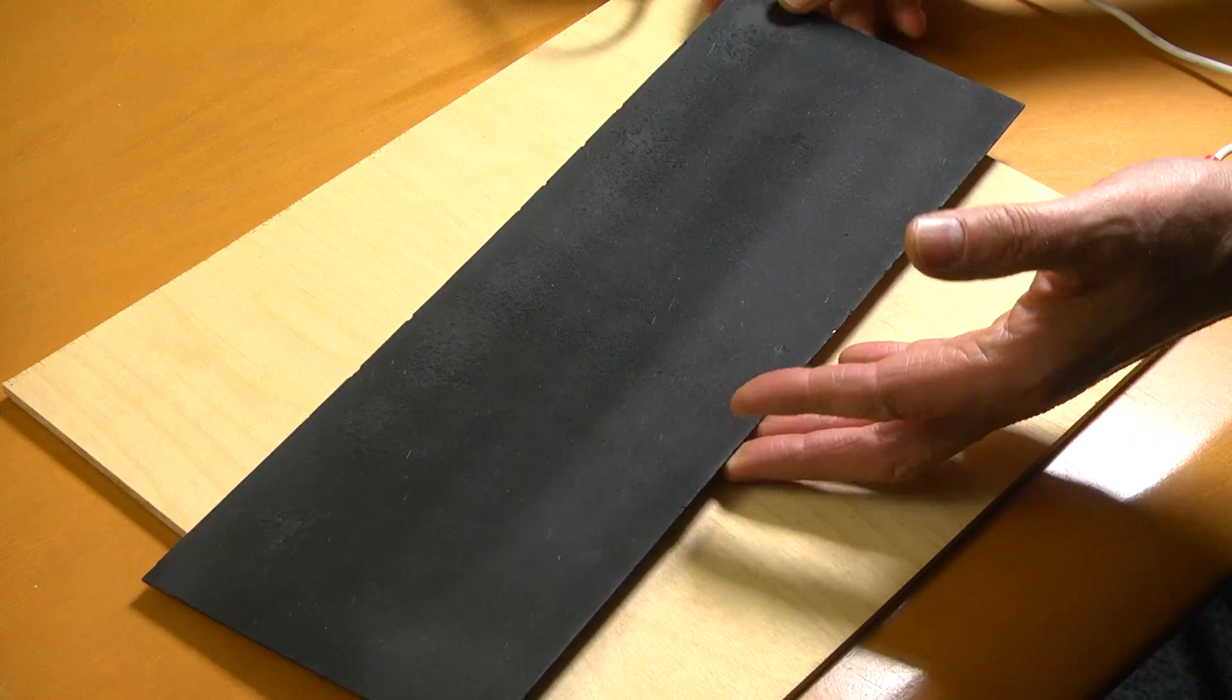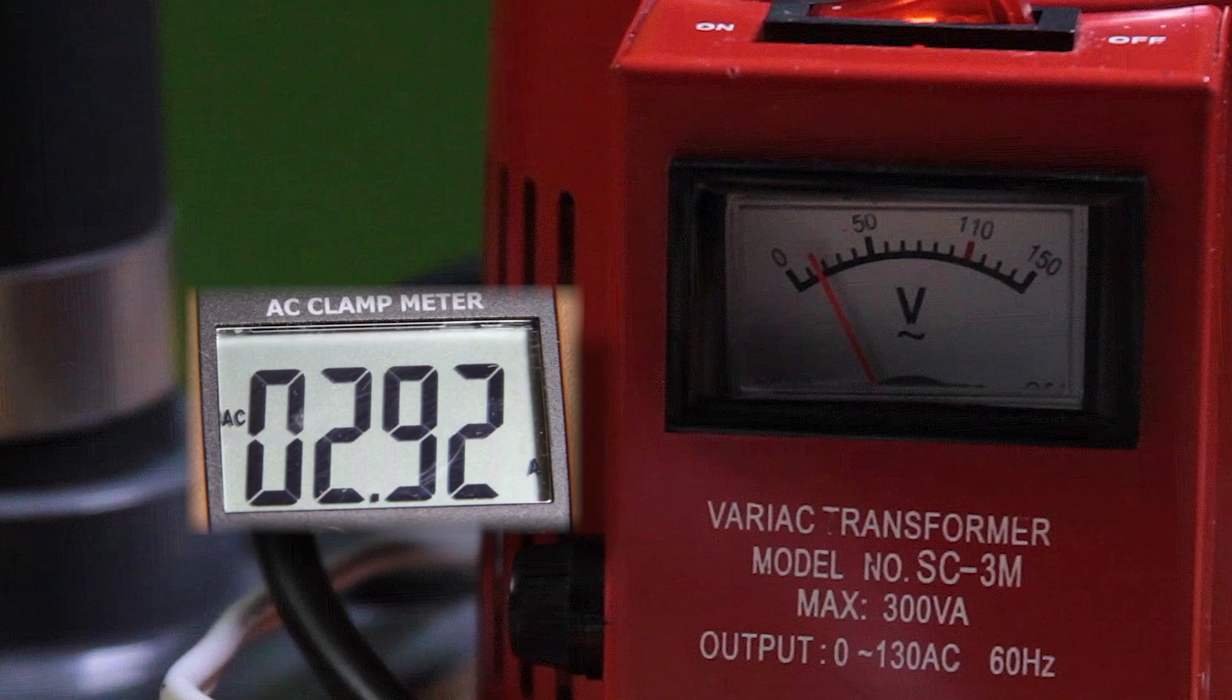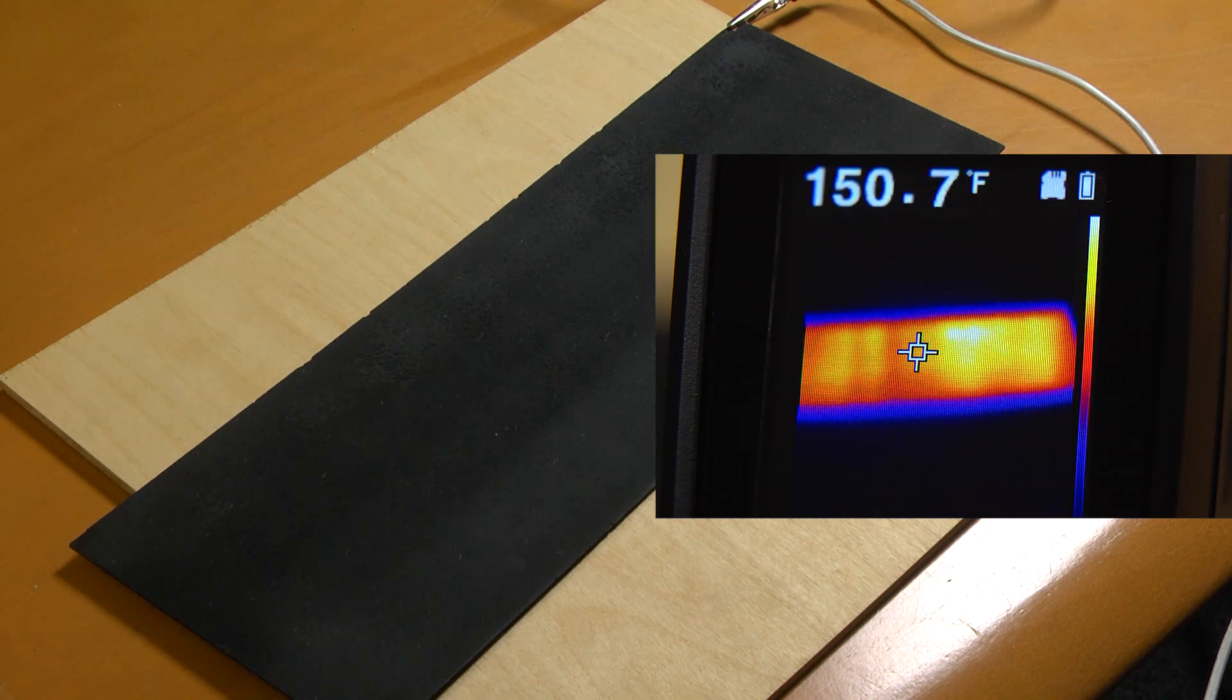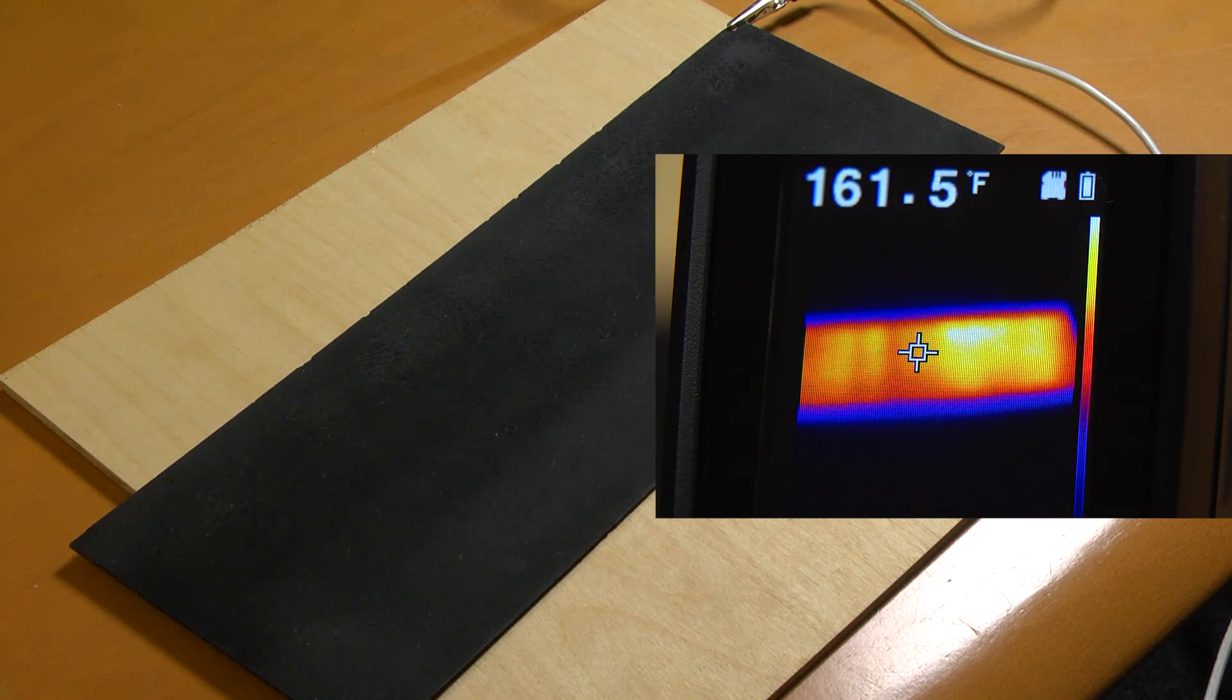This plastic panel has been sprayed with Thermal Coat, and with low voltage and low amperage applied, it takes just minutes to evenly heat the surface and reach a temperature of over 160 degrees.